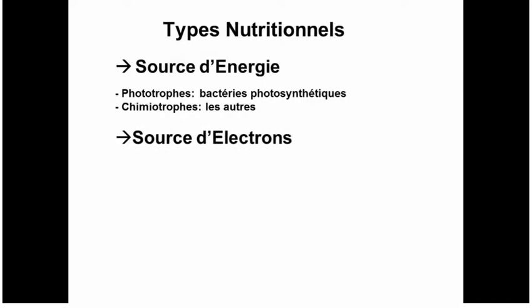Now we move on to nutritional types. The nutritional types of bacteria are characterized by what they use as their source of energy — light for photosynthetic bacteria, or chemicals for the others. Photosynthetic bacteria are called phototrophs and the others are chemotrophs.